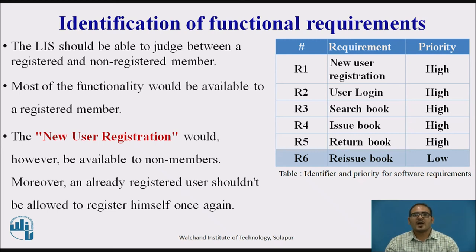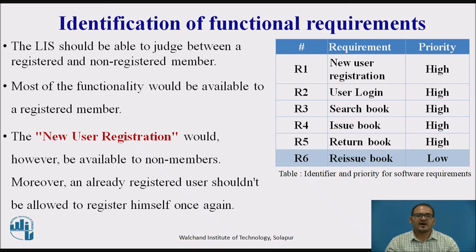Moreover, an already registered user should not be allowed to register again. Having identified the major functional requirements, we assign a unique identifier to each for future reference and verification. The following table shows the requirements, their unique IDs, and their priority — high priority or low priority.